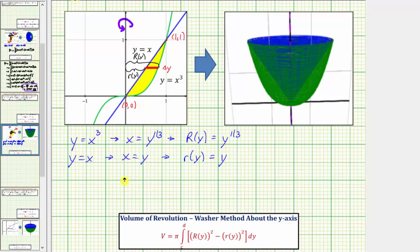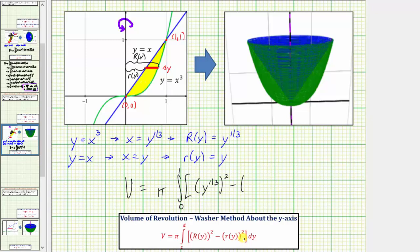This means the volume V equals pi times the integral with respect to y. The interval for y over this boundary region is from zero to one along the y-axis, so the limits of integration are from zero to one. We then have the square of big R(y), which is y to the one-third squared, minus the square of little r(y), which is y squared, all integrated with respect to y.